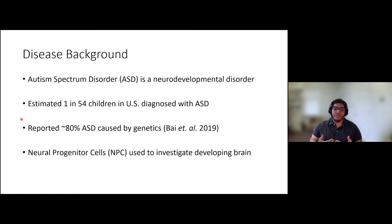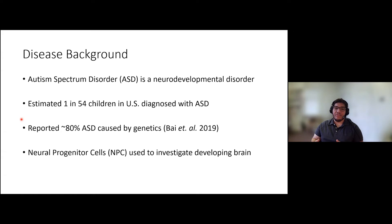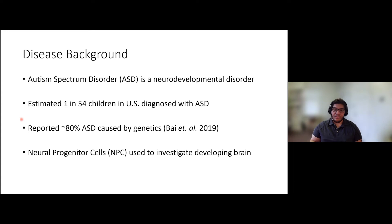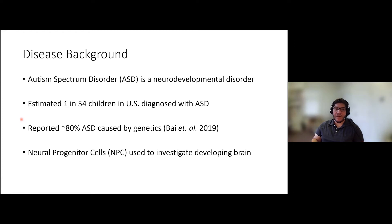That leads us to want to figure out if we can find any of these genetic factors for autism. To do that, we wanted to investigate neuroprogenitor cells, or NPCs, because those are the cells found in the developing brain tissue — a good starting place to see where functional effects occur and to identify any genetic factors at play.